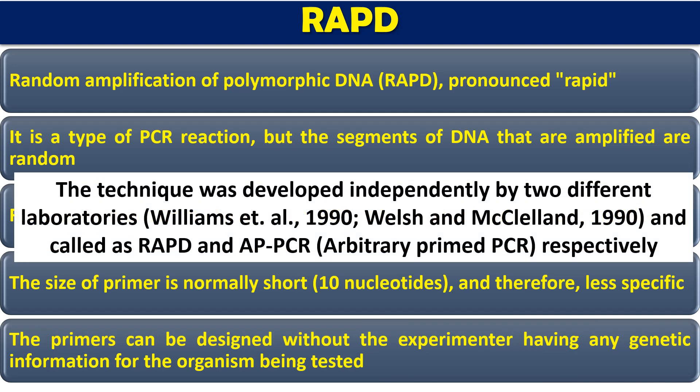This technique, the RAPD technique, was invented independently by two different labs in the same year. That was Williamson et al. in 1990, and Wells and Macriand in 1990. They both called it a different name: Williamson called it the RAPD test, and Wells and Macriand called it AP-PCR — that is Arbitrary Primer PCR. Later on, the name RAPD was given to this technique.